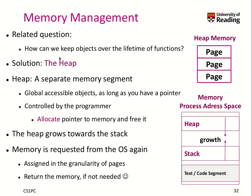The key question was: how can we keep objects over the lifetime of functions and share the values of those objects? The solution is the heap. The heap is a separate memory segment that grows towards the stack. In your process address space, we have the text and code segment, the stack that grows with function invocations — putting on and removing stack frames — and now we have the heap, a separate memory segment that contains any globally accessible object you like.